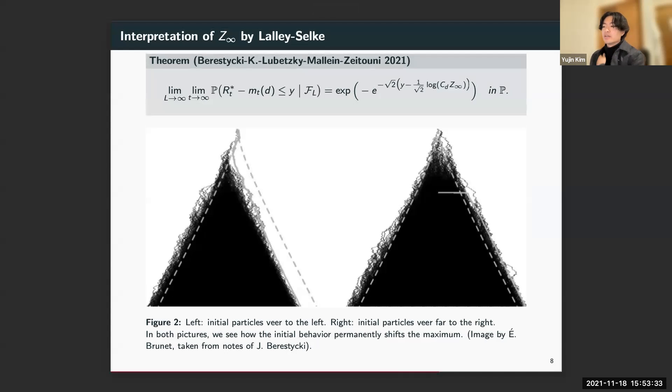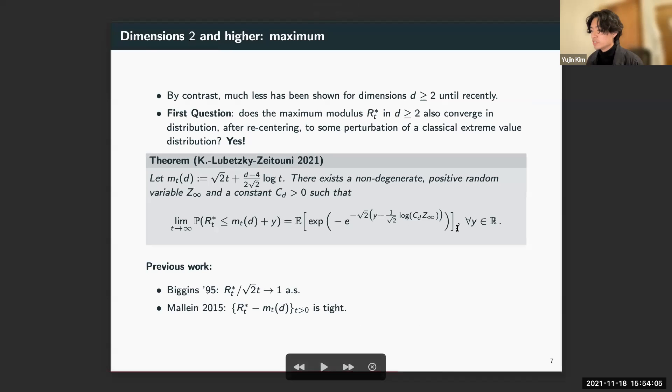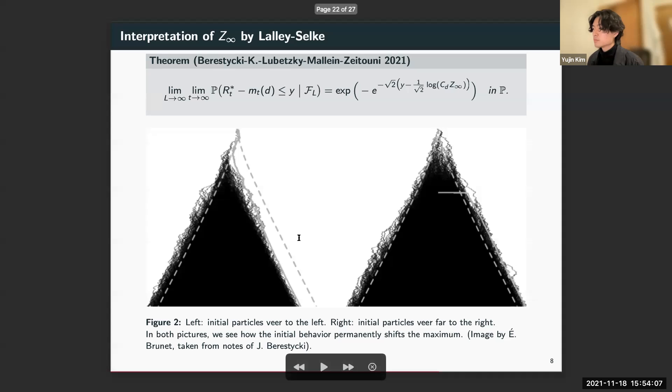At the top of the screen here is a result of the Lalley-Selke type that I mentioned earlier, but this time for any dimension. The idea here is we condition on some fixed time ℓ, then send t to infinity. We're looking at r_t^* recentered, and then after we send t to infinity, we send ℓ to infinity. From the perspective of t, ℓ is just some constant—it's large but it's some fixed constant. What we end up with on the right-hand side is a limiting random variable that's exactly what was inside the expectation on the previous slide.